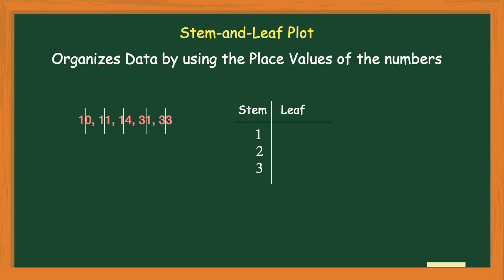Now that I have my stems done, I'll do my leaves. Going back to the number 10: the 1 is in the tens place and the 0 is in the ones place — that's what goes in the leaf column. So when you see that 1 in the stem and the 0 in the leaf, that means the number is 10. Same for 11: it has a 1 in the tens place and a 1 in the ones place, so you'd read that as 11. And then 14 has the 1 in the tens place and a 4 in the ones place — on the leaf column you see those three numbers: 10, 11, and 14.